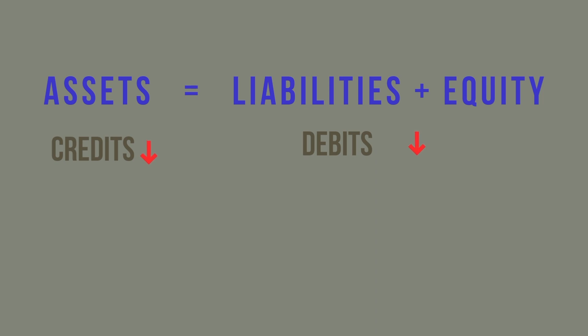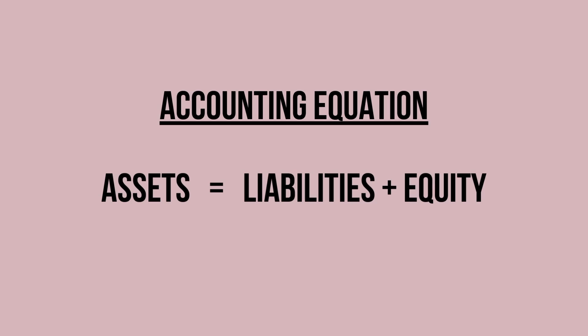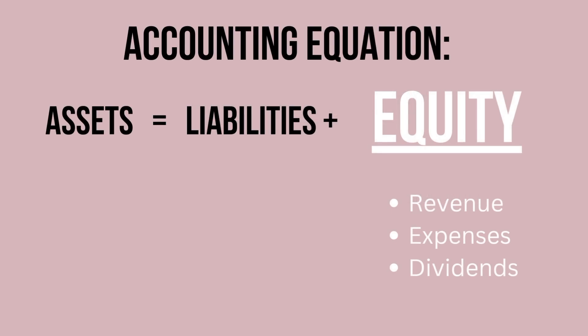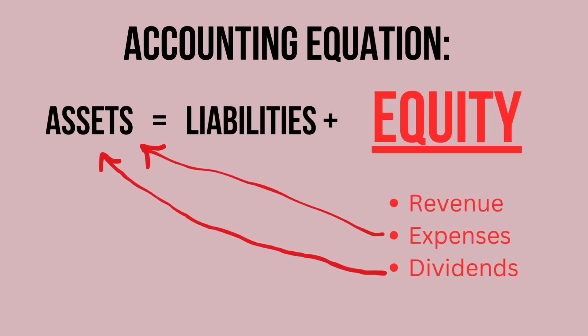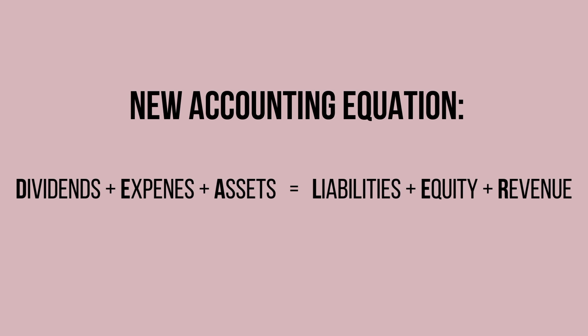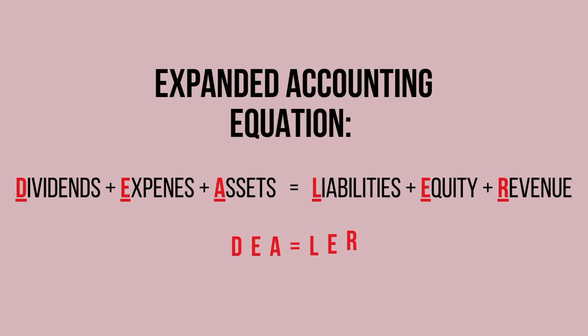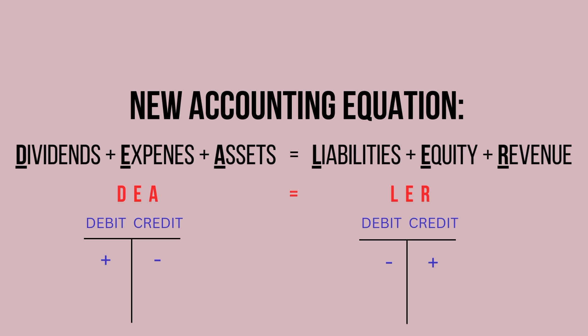So let's quickly recap how debits and credits affect the accounting equation. In accounting, debits increase dividends, expenses, and assets, but decrease liability, equity, and revenue accounts. Conversely, credits increase liability, equity, and revenue accounts, but decrease dividends, assets, and expense accounts.